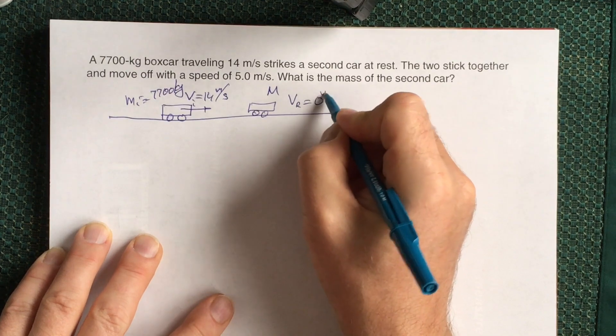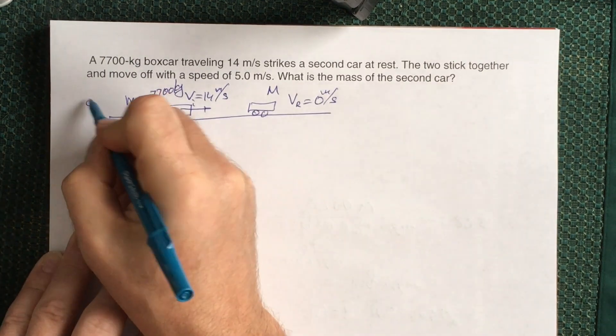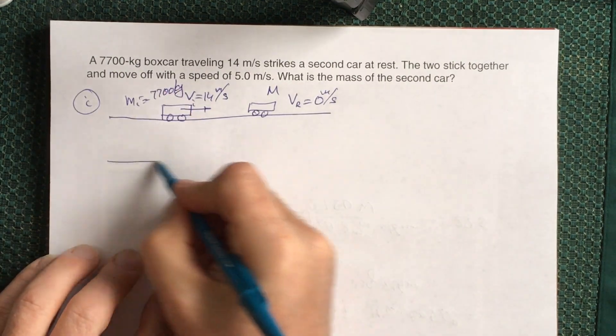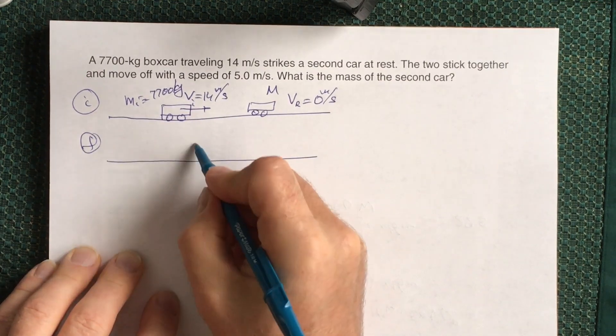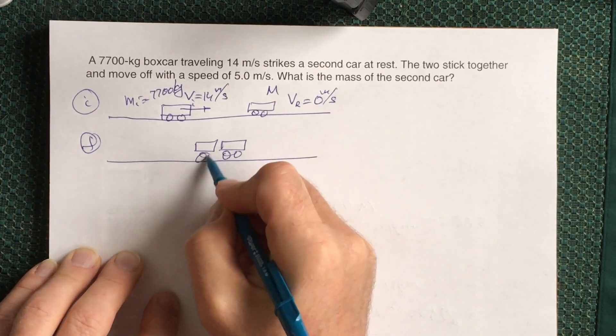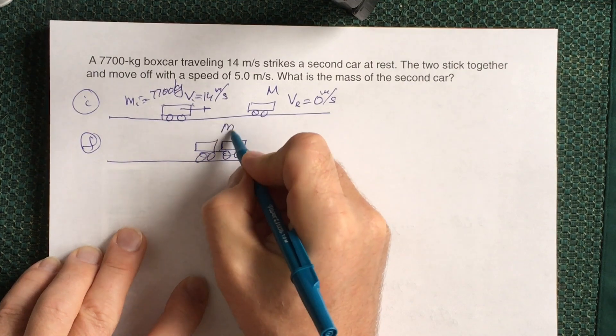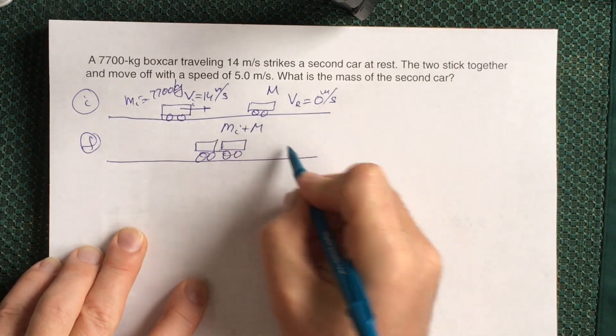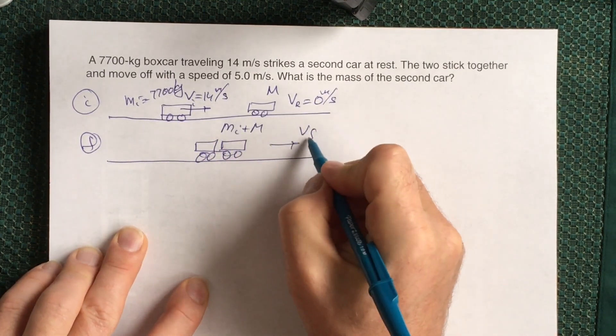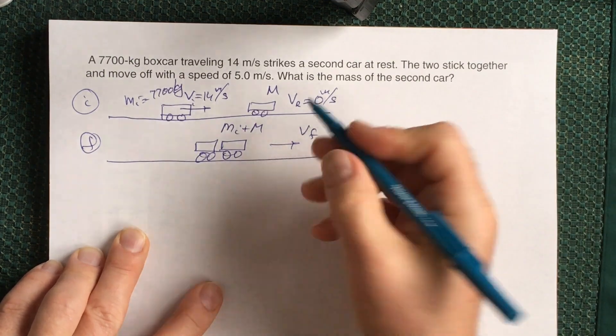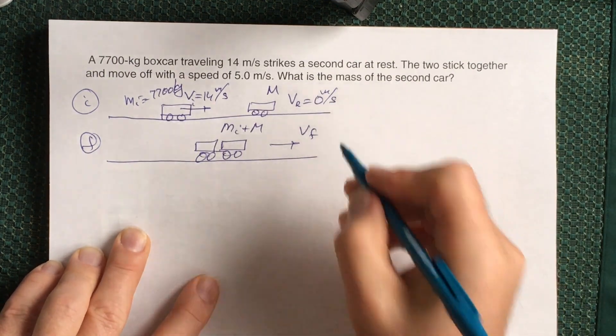The final situation: we have coupled together two boxcars with overall mass m initial plus M capital, which moves finally in the same direction as the initial boxcar moved, with a speed of 5 meters per second.